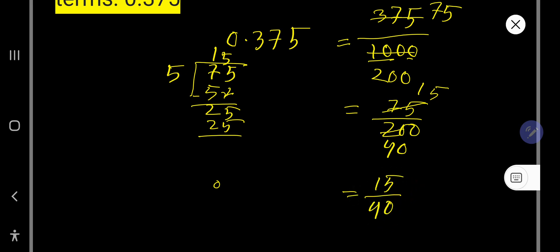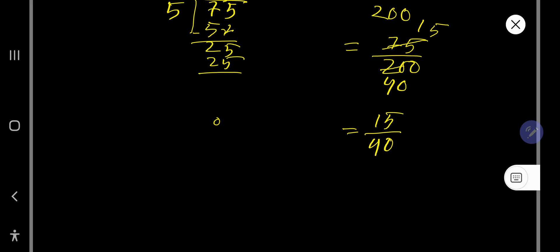Again you can divide this 15 by 5. You will get 3. And if you divide this 40 by 5 then you will get 8. That is 3 over 8 is the answer. I think you have understood.